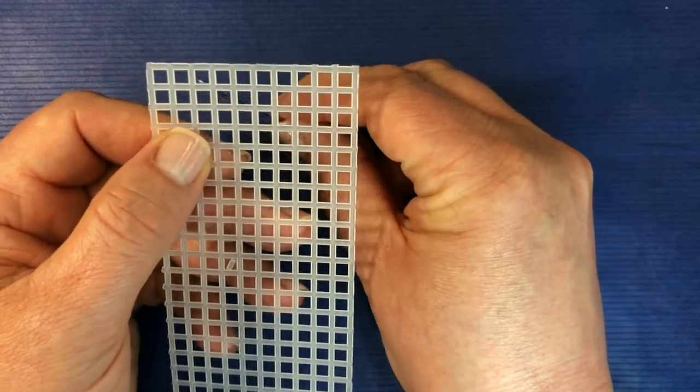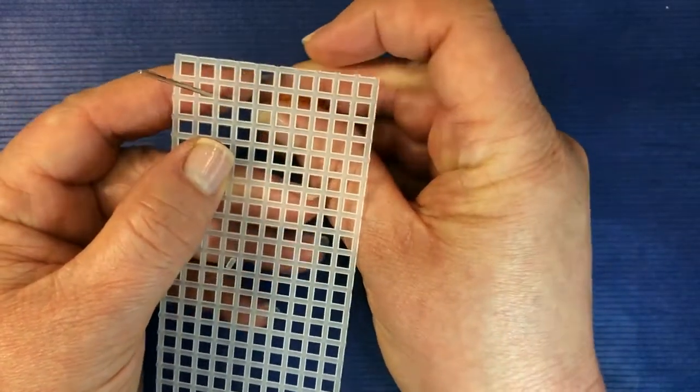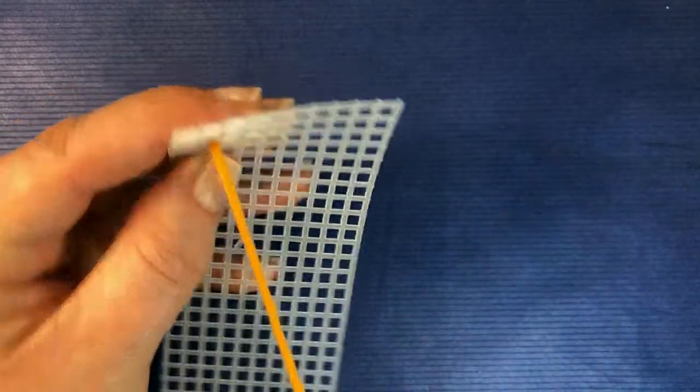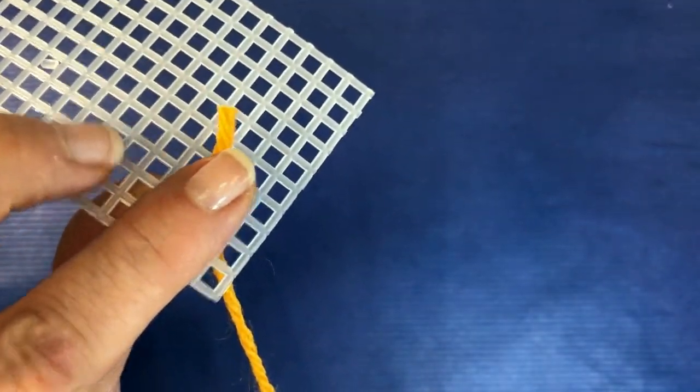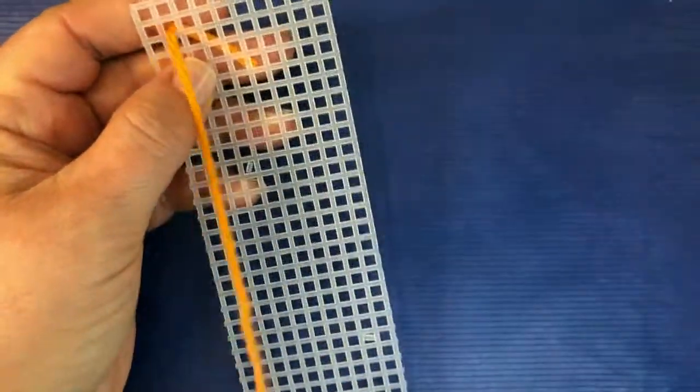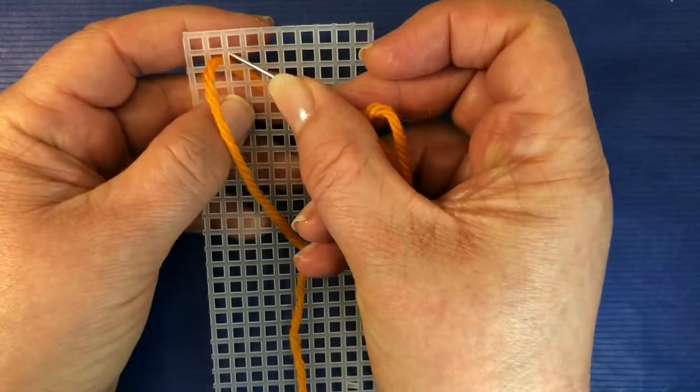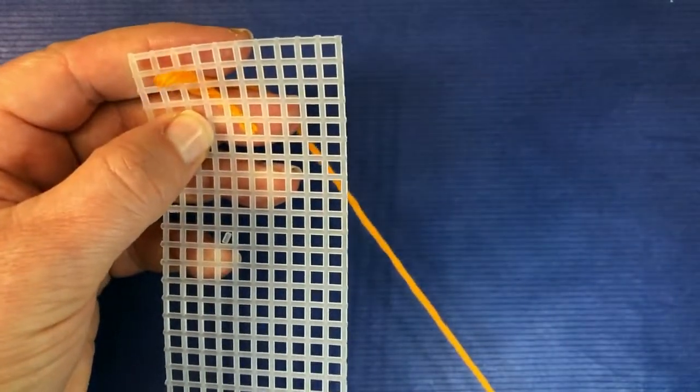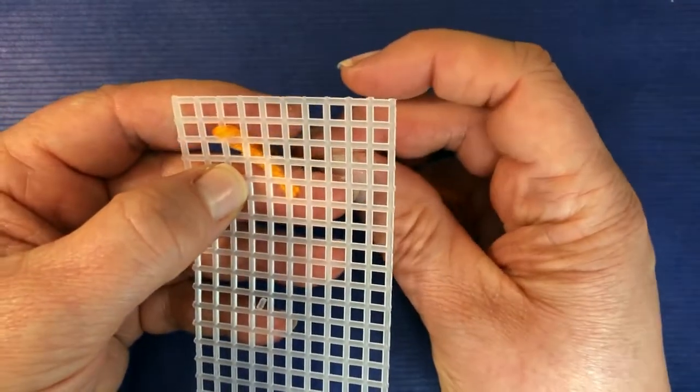Okay, let's look at running stitch. Pull your threaded needle through from the back. Make sure that you hold a tail, go into the next stitch or thread or hole, come back up through.